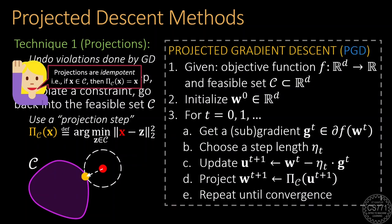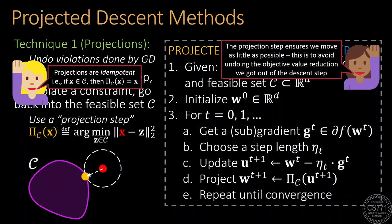The projected gradient descent algorithm is identical to the gradient descent algorithm except that it projects back onto the feasible set after every gradient step. Notice that the projection step moves as little as possible so as to not mess up the progress made by the descent step.